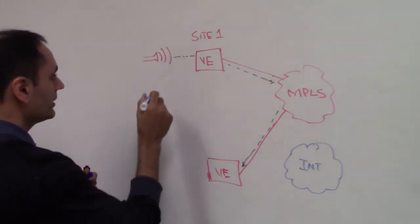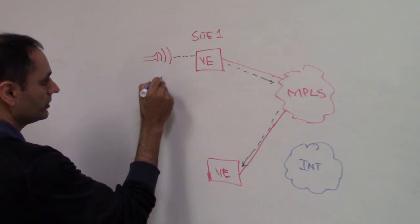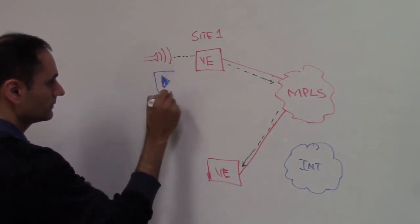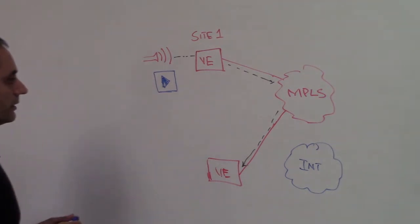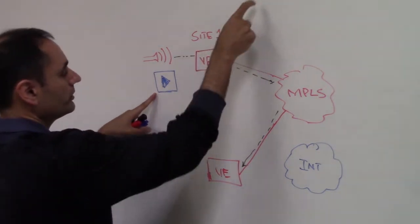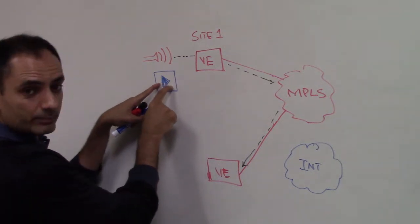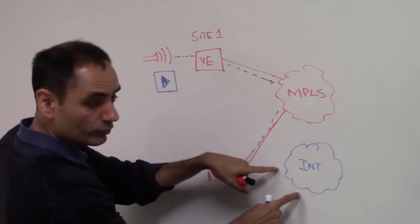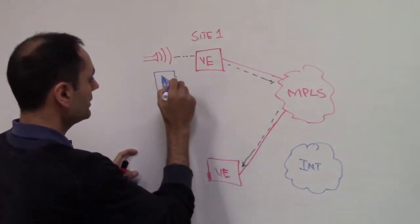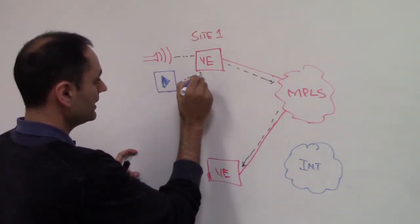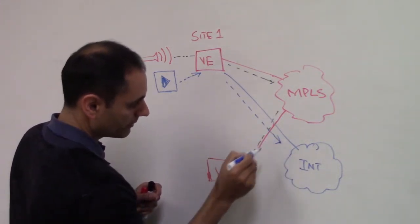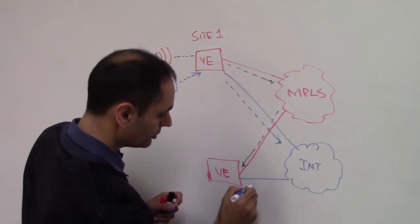You introduce another application. Let's say, in this case, you have some enterprise video application. Now you need to make sure that the video application traffic goes between sites over the broadband transport. So video traffic in site one comes to this V-Edge, takes the transport which is connected to broadband and then similarly it goes to site two.